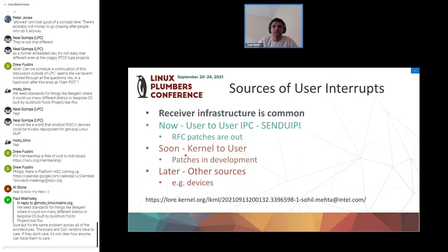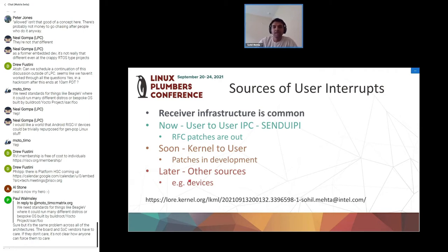There are other forms of user interrupts — one where a kernel source generates an interrupt that gets delivered directly to the user. The patches for this are still in development but are possible with the Sapphire Rapids platform. In the future, we envision other sources like devices or any external source that could generate an interrupt delivered directly to the application, though this technology is still being defined.